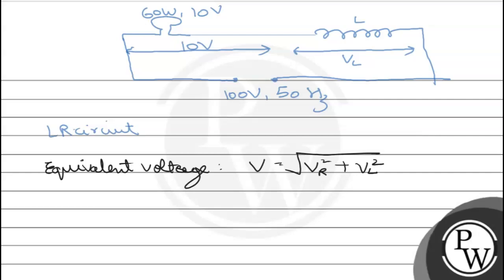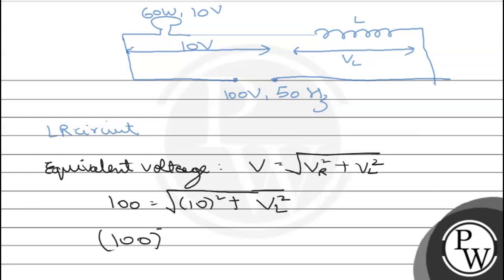हमारे पास main line का equivalent voltage दे रखा है 100 volt। So it will be: 100 = √(10² + VL²). Bulb का voltage है 10, so Vr = 10. Hence: 100² = 100 + VL², which gives us VL.